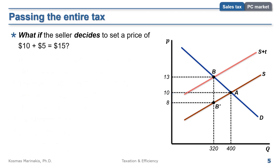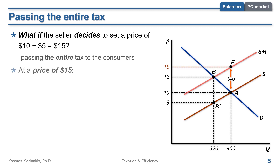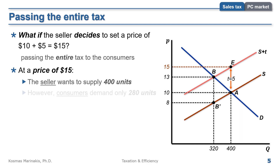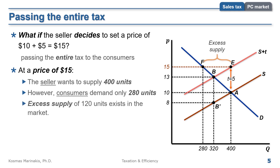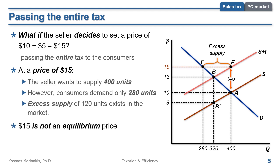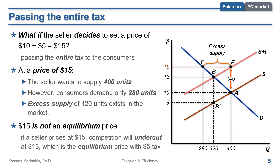But what if the seller decides to pass the entire tax to the consumers? In other words, why doesn't the seller just go to a point like E instead of B? If the seller sets a price of $15, he will want to supply 400 units at that price. However, the item is now too expensive for consumers, and they will decrease their quantity demanded to only 280 units. This will create excess supply of 120 units, which will generate pressure for the price to decrease. $15 is not an equilibrium price, and if the seller insists on it, competition will undercut at $13, and this seller will not be competitive.